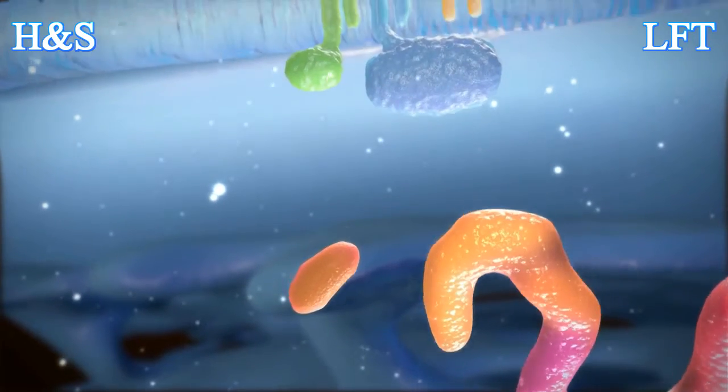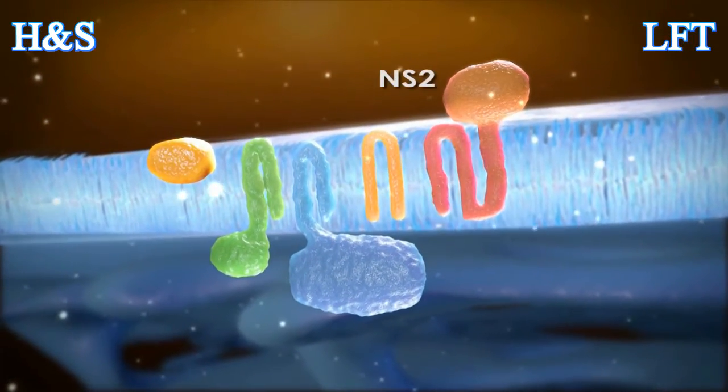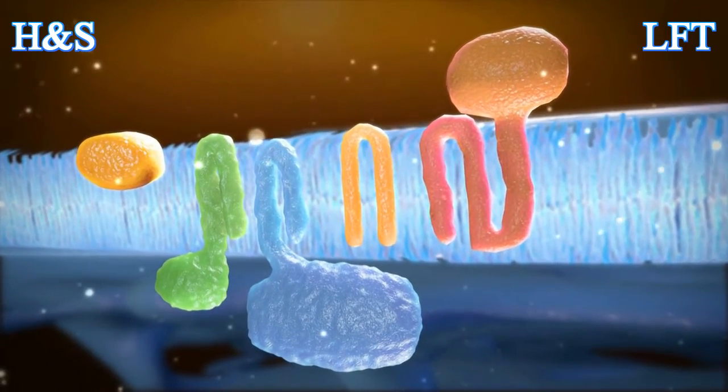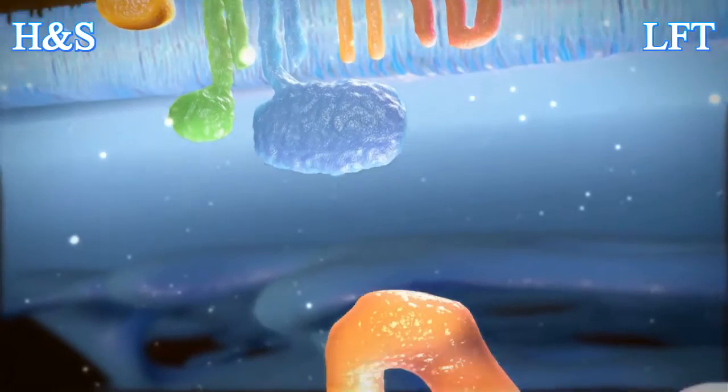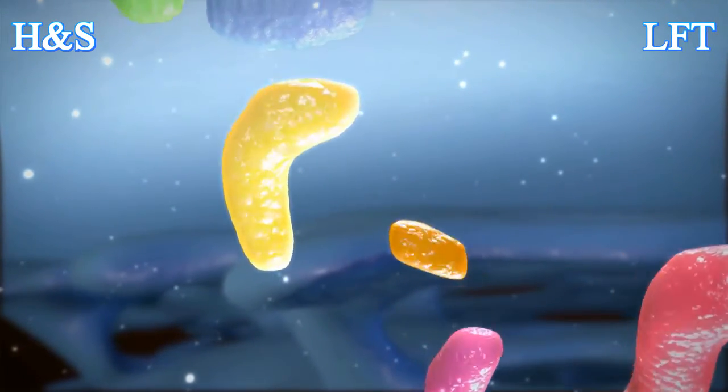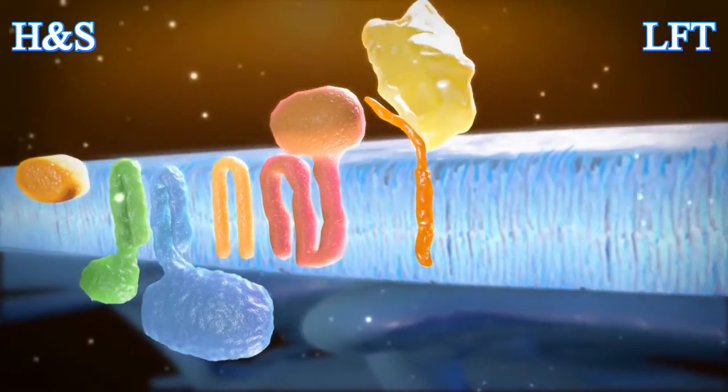The remaining six proteins are freed by viral proteases. NS2, a cysteine protease, interacts with NS3, a serine protease, to separate itself from the polyprotein. Then, NS3 works with NS4A to separate itself from the polyprotein.